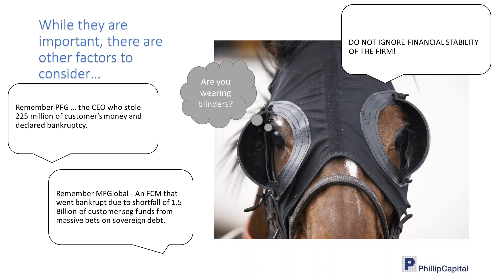Remember these stories — they happened very recently. In PFG in 2011, the CEO Russell stole $225 million of customer segregated funds, which resulted in the company declaring bankruptcy. He fooled the regulators by falsifying bank statements. Then consider MF Global in 2011, when John Corzine was CEO — the firm had a shortfall of $1.5 billion in customer money due to large excessive bets on European sovereign debt.